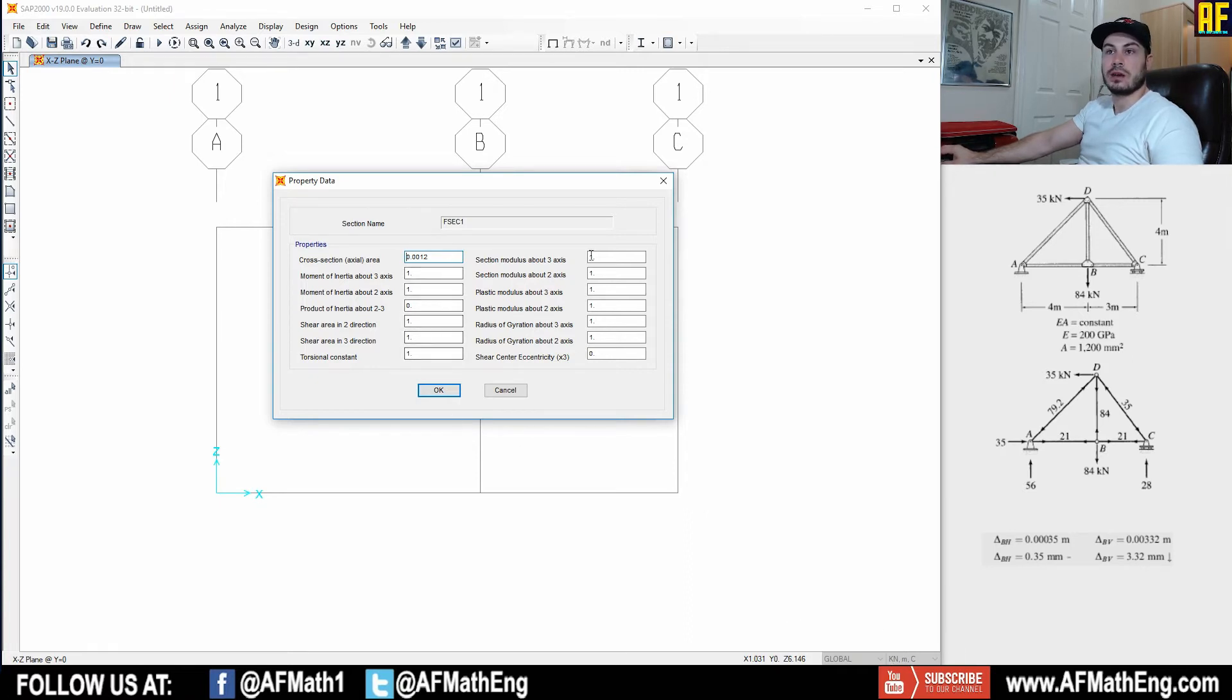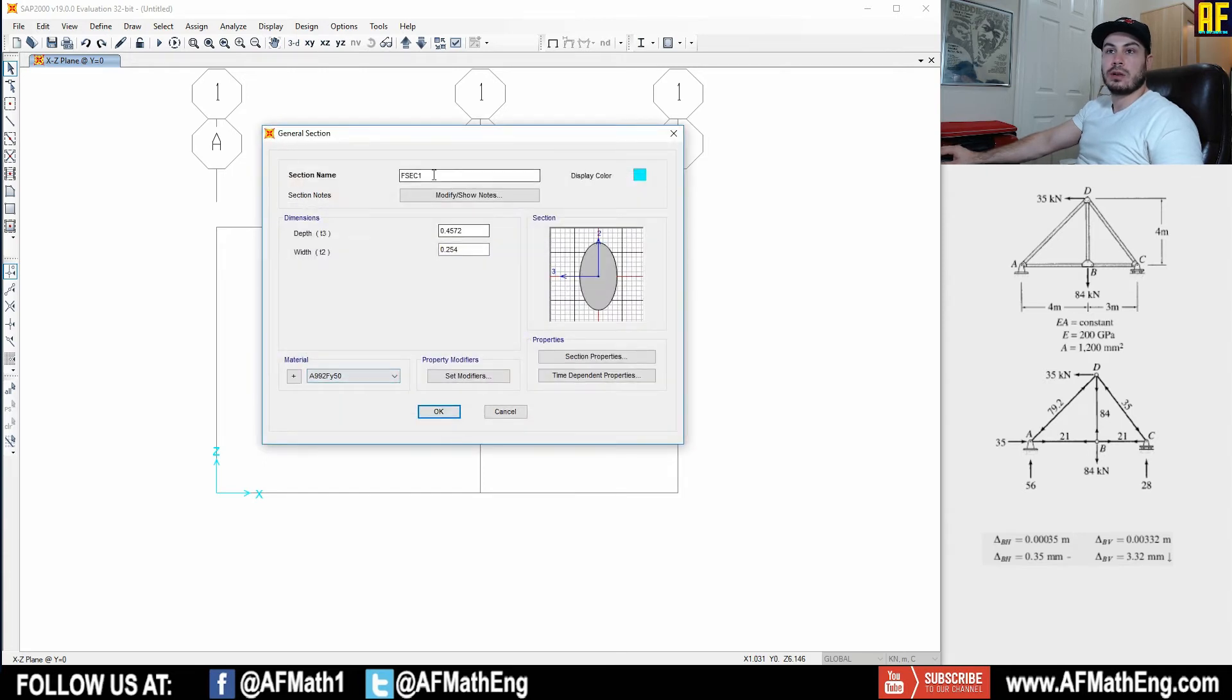And once we press okay, SAP is immediately going to convert that to the units that are specified down here. As you see, we have kilonewton and meters. So we have a meter unit. So that's everything here. Very good. Press okay. And let's rename our section to be truss and our material, let's select truss, that material that we selected there and press okay.